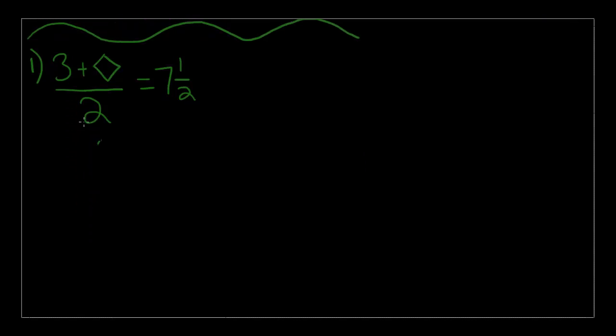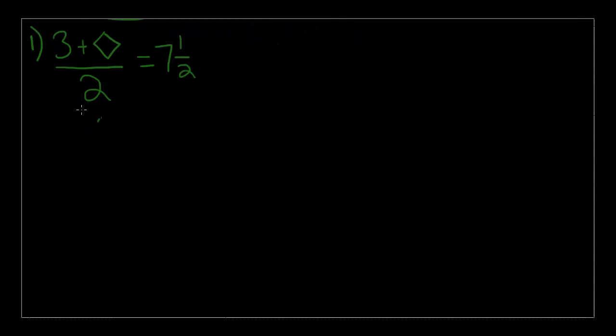So let's just begin. The first question gives us this equation: 3 plus diamond over 2 is equal to 7 and 1/2, or half. So what number, when used in place of the diamond above, makes the statement true?